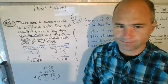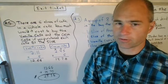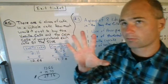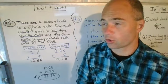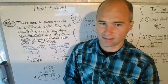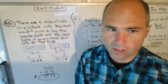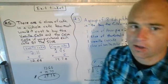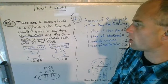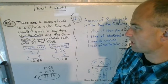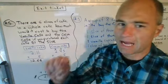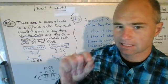Now there were two number fives. If you did the paper version or you looked at the Google PowerPoint presentation in the Google Form, or if you just did the Google Form, it was the two exit ticket questions. The first exit ticket question asks: there are six slices of cake in a whole cake. How much would it cost to buy the vanilla cake and the cocoa cake if you purchased each cake by the slice?